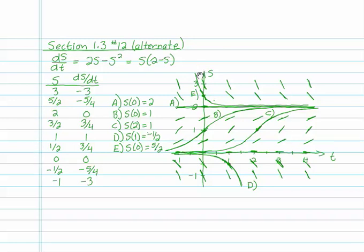I draw a picture where the s-axis goes from minus 1 to 3 and the t-axis goes from minus 1 to 4. I put in the number for s and I create the value for ds/dt. For example, when s is 2, ds/dt is 0. That means there's a horizontal slope line at that point, t equals 0 and s equals 2.